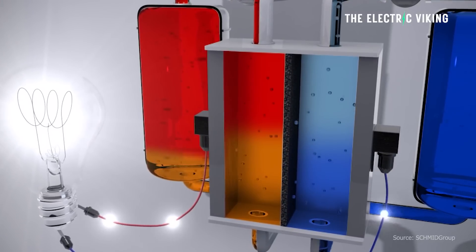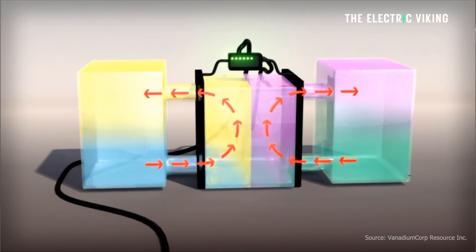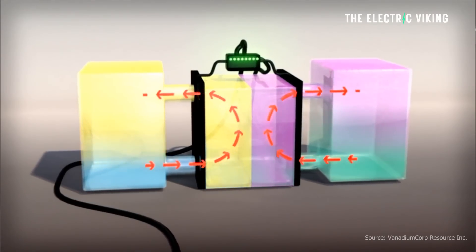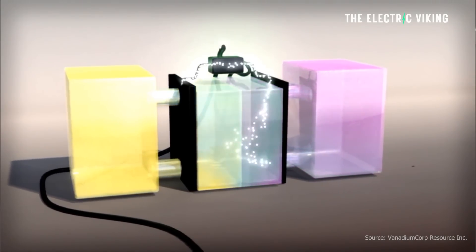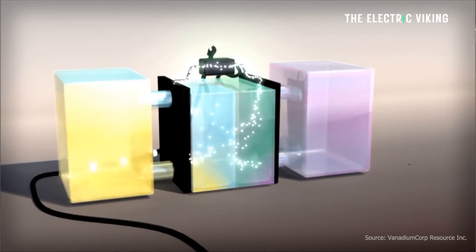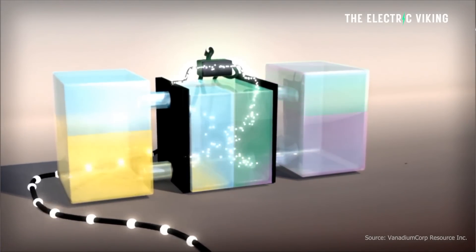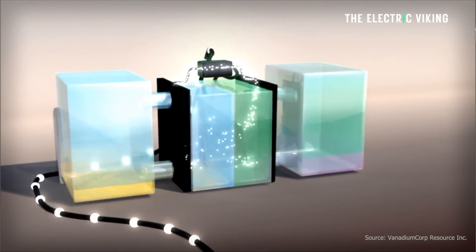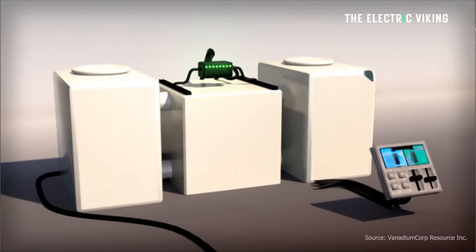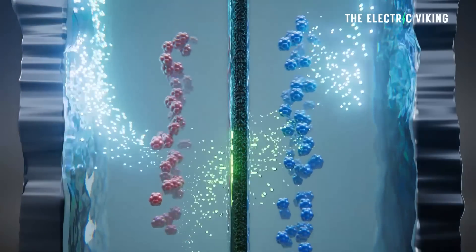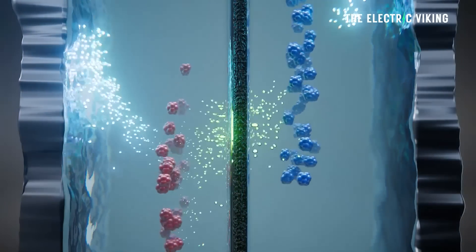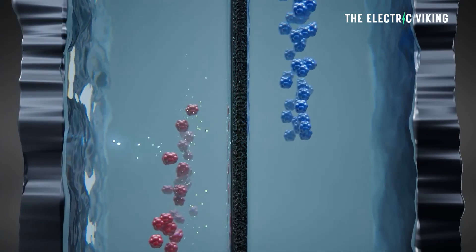The key components to a flow battery include two electrolyte tanks, one for positive electrolyte and the other for negative electrolyte, a pump to circulate the electrolytes, and an electrochemical cell where the reactions occur. The flow battery operates by pumping the electrolytes from the storage tanks into the cell where the chemical reactions generate electrical energy. The flow of the electrolytes can be controlled to adjust the power output and storage capacity of the battery.